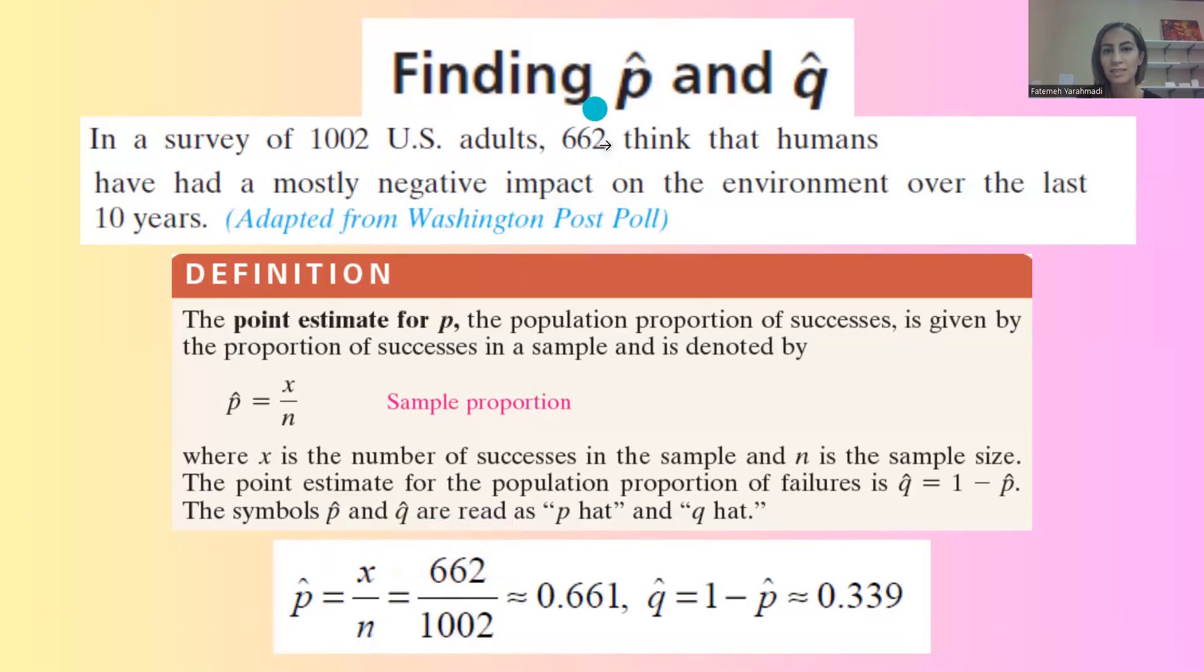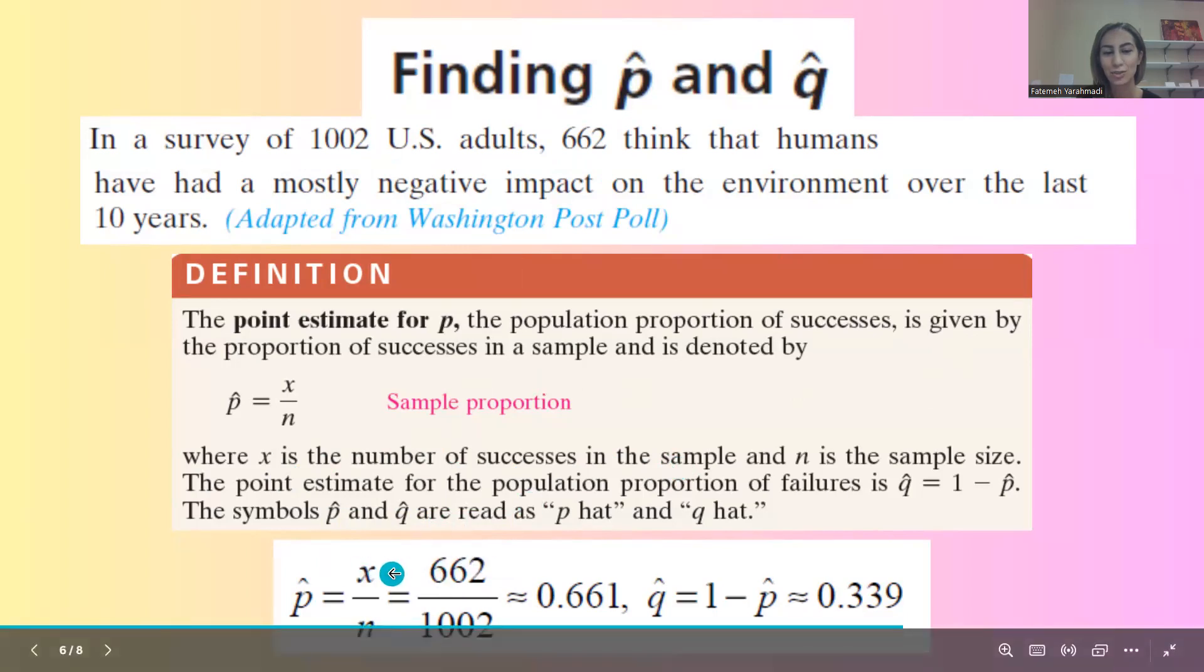The number of successes is 662. So as you remember, X is the number of successes in the sample. So X is 662.